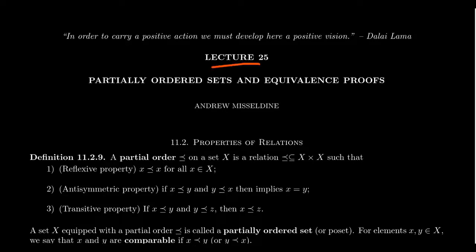This is the first video for Lecture 25. Let me remind you that in the previous Lecture 24, we introduced so-called properties of relations — five properties that a relation can have. Recall that a relation is a subset of the Cartesian product; it's a way of connecting two objects that belong to a set together. We talked about the reflexive property and its antonym, the irreflexive property, the symmetric property with its counterpart the anti-symmetric property, and also the transitive property.